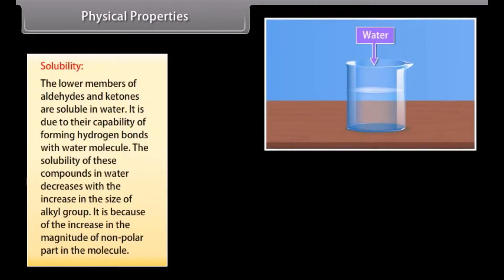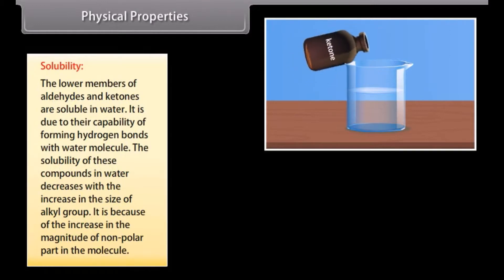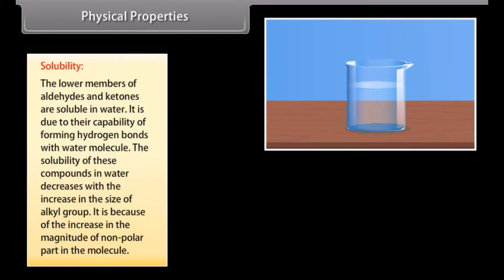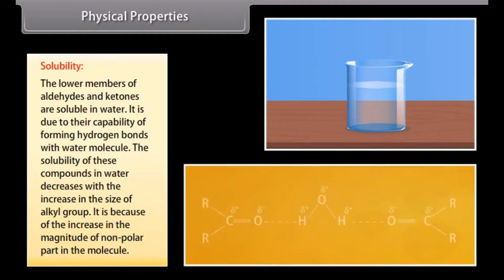Solubility. The lower members of aldehydes and ketones are soluble in water due to their capability of forming hydrogen bonds with water molecules. The solubility of these compounds in water decreases with the increase in the size of the alkyl group, because of the increase in the magnitude of the non-polar part of the molecule.